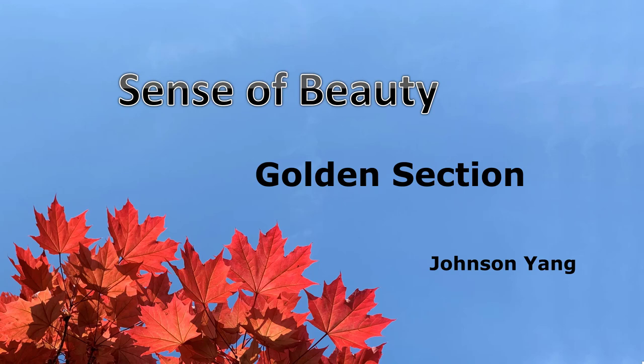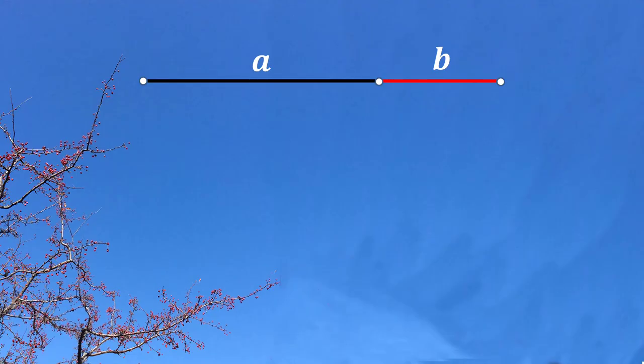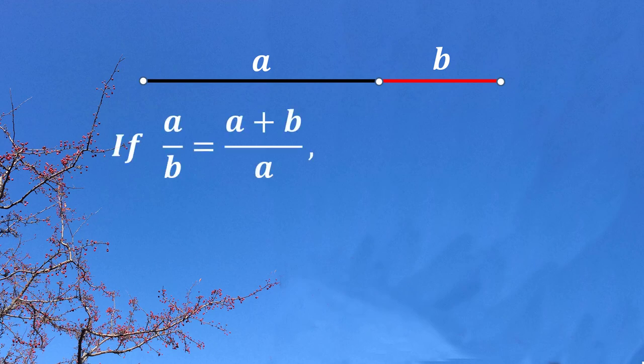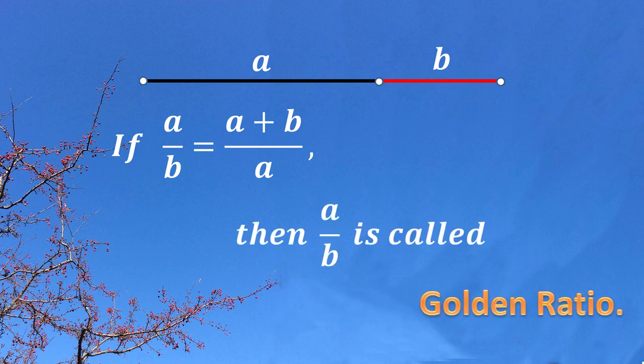Golden section. Two line segments with length A and B. If we have the ratio A divided by B equal to the whole length A plus B divided by the longer one A, if they are equal, then the ratio A over B is called golden ratio.